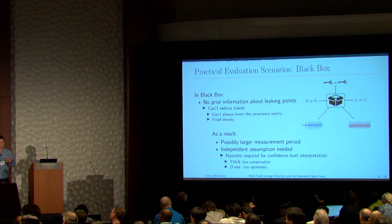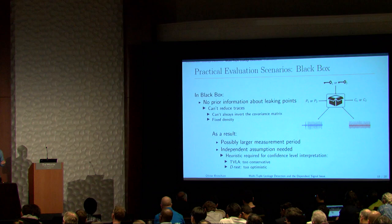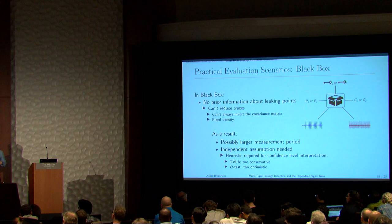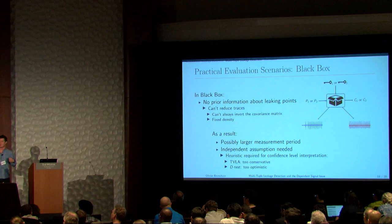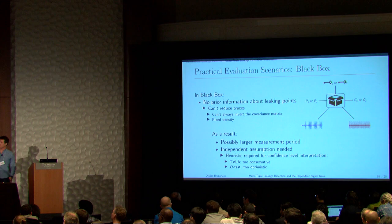In the paper, we showed that using TVLA in the black-box setting makes you too conservative — if you claim a p-value of 10 to the minus 5, it may actually be much smaller. For the D-test, it's the other way around: you are too optimistic. The true confidence level lies between the two.